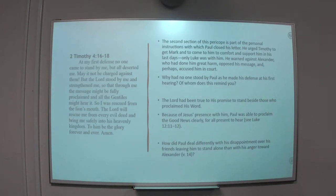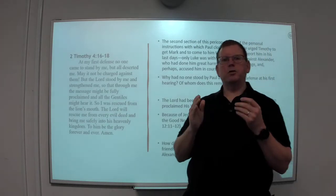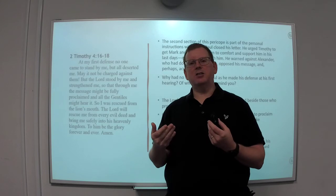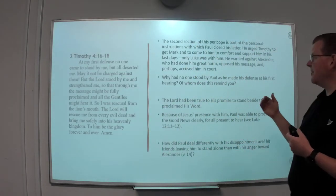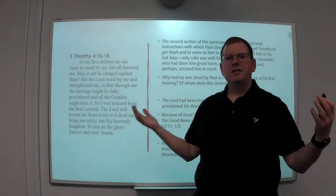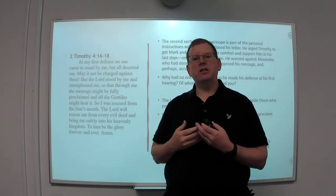So the second section of this pericope is part of the personal instructions with which Paul closed his letter. He urged Timothy to get Mark and to come to him to comfort and support him in his last days. Only Luke was with him. He warned against Alexander who had done him great harm, opposed his message and perhaps accused him in court. Why had not one stood by Paul as he made his defense at his first hearing? Of whom does this remind you? When Paul is facing this opposition and the result of being a believer and a proclaimer of the gospel and knowing that it means imprisonment and death, many will fall away. Many will be scattered when this reality hits home to them.